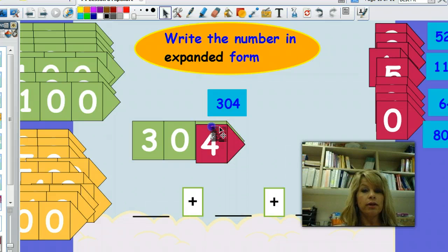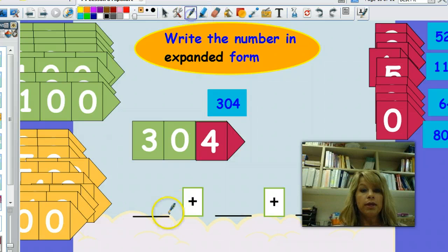So be careful with numbers that have 0 in the tens place. So expanded form then would be 300, how many tens? 0, and 4 ones. And that's our expanded form.